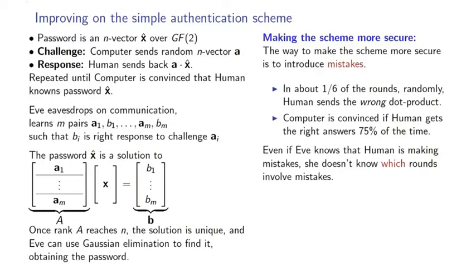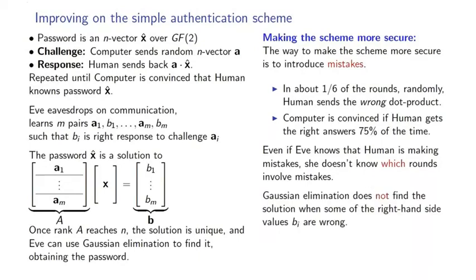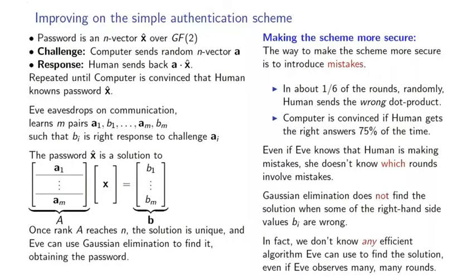Even if she knows that the human is introducing intentional errors, she doesn't know in which rounds the errors are being introduced. So Eve can't just take the challenges and responses that she observes and plug them into Gaussian elimination because it will get the wrong answer. In fact, we don't know of any efficient algorithm that will find the password when the right-hand sides are wrong. So this scheme in which mistakes are intentionally introduced could actually be a secure authentication scheme.